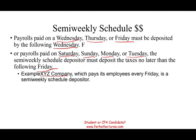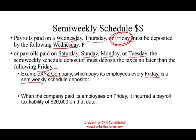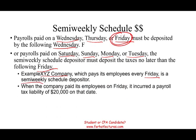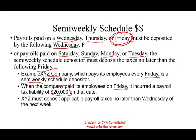For example, XYZ Company pays its employees every Friday. Under the semi-weekly schedule deposit, they have to pay by the following Wednesday. When the company paid its employees on Friday and incurred payroll of $20,000 on that date, no later than Wednesday — you can pay it earlier — you have to make that payment.